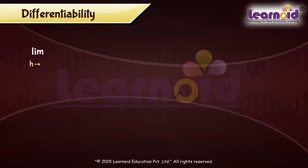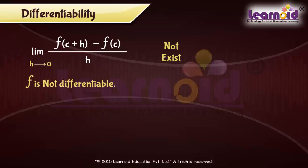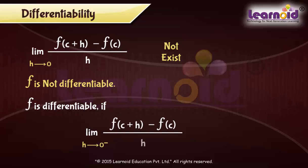If limit h tends to 0 of f(c+h) minus f(c) by h does not exist, then we can say that f is not differentiable at c. In other words, f is differentiable at a point c in its domain if both left hand limit and right hand limit are finite and equal.